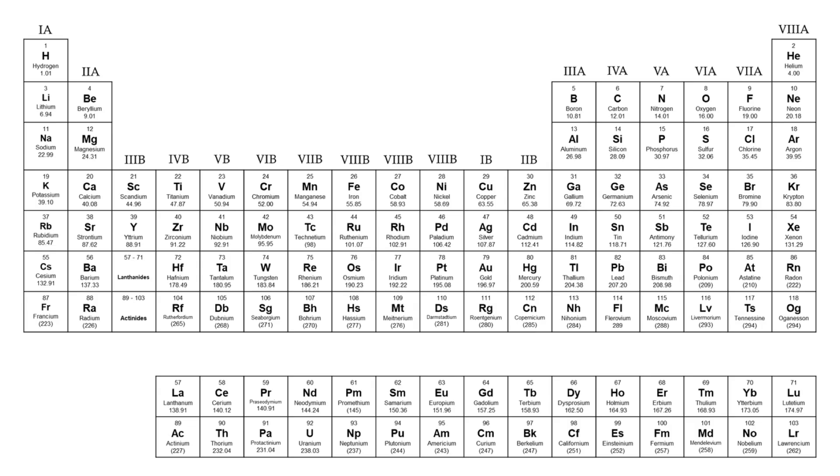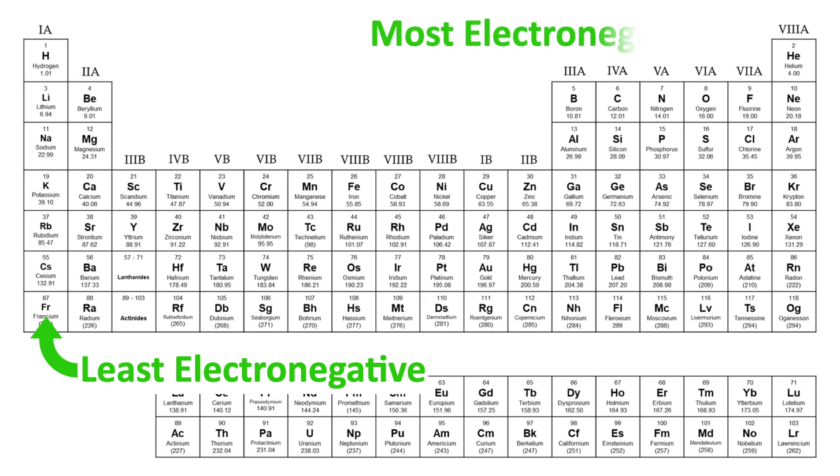This trick works because the greatest ionic character is due to having the greatest electronegativity difference between the metal and the non-metal in the ionic compound. And the greatest electronegativity difference would be between atoms that are closer to the bottom left corner of the periodic table and atoms closer to the top right corner of the periodic table, creating the greatest positive slope as well as the longest line.